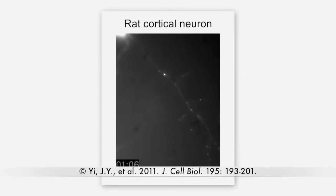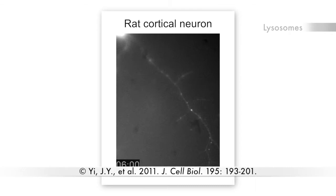In neurons, degradative lysosomes exist in both the cell body and the axon, where they are moved back and forth along the microtubule cytoskeleton by molecular motors. Gentry Patrick and colleagues at the University of California, San Diego have previously shown that dendritic membrane proteins, such as post-synaptic AMPA receptors, can also be targeted to lysosomes for degradation.